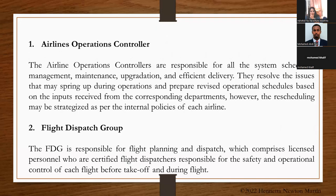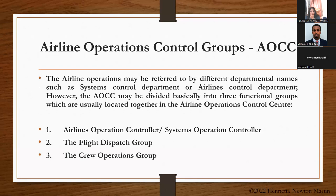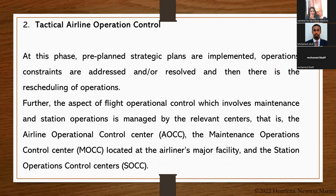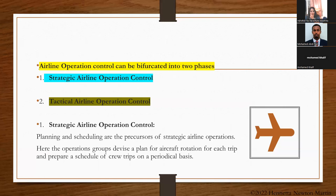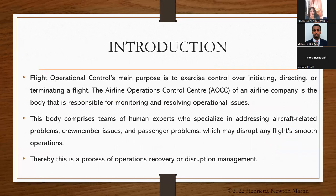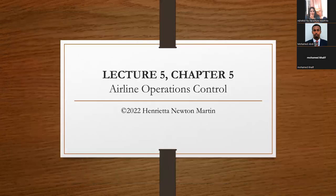Any questions? Flight operations are taken care of by operation control groups, which are divided into three: systems operation control group — which takes care of flight takeoff and monitors flights in the air — and crew operations group, which schedules and monitors crew operations. Airline operation control can be bifurcated into two phases: strategic airline operation control, which is a precursor for strategic airline operations, and tactical airline operation control. Any questions?